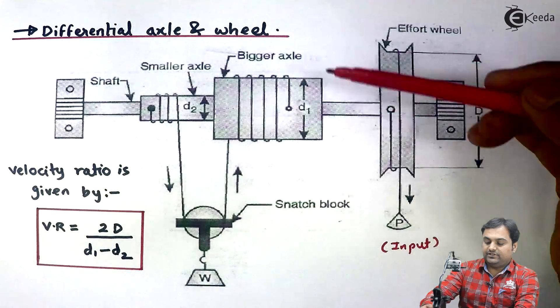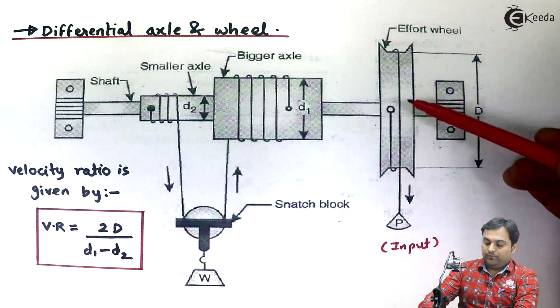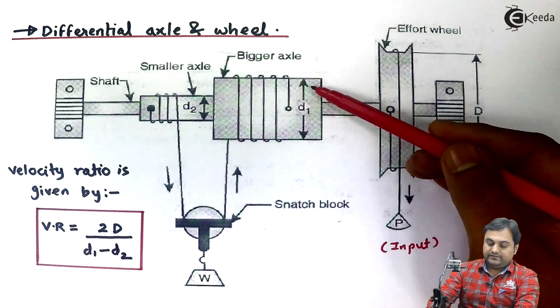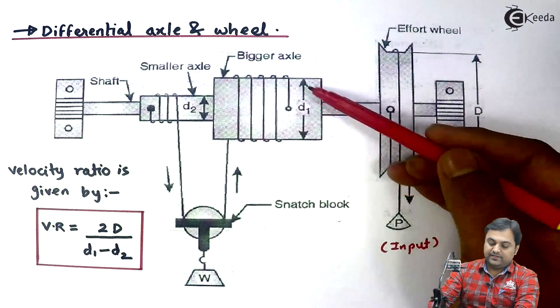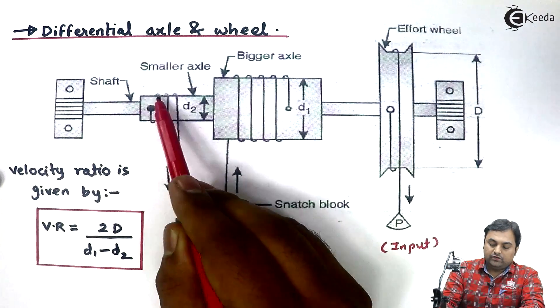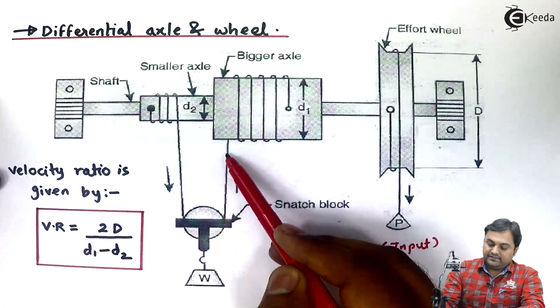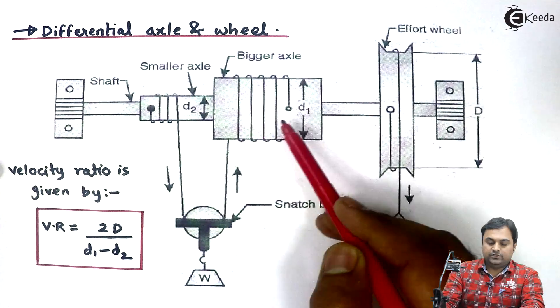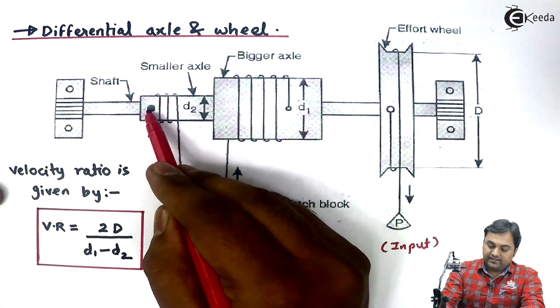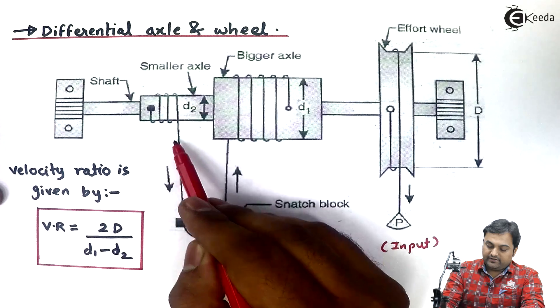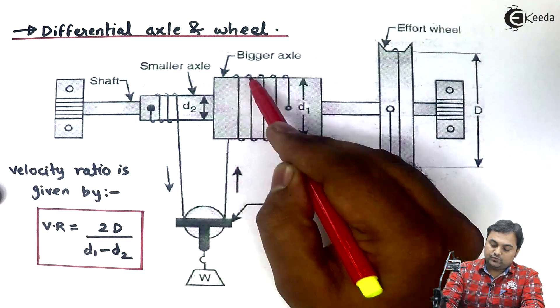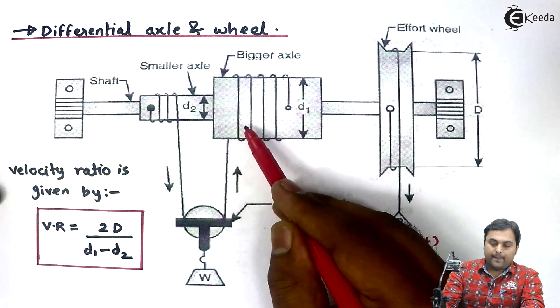When the string is unwound from the effort wheel, the shaft rotates. The bigger axle will rotate and what happens is that the string gets unwound from the smaller axle and it gets wound onto the bigger axle. As we can see, this arrow is pointing downwards. It means the string is getting unwound from smaller axle and gets wound. Once it is wound onto the bigger axle, the load will move up.